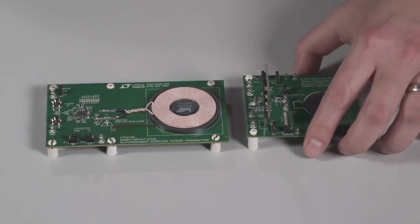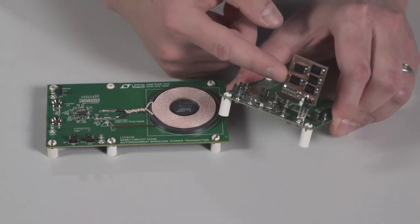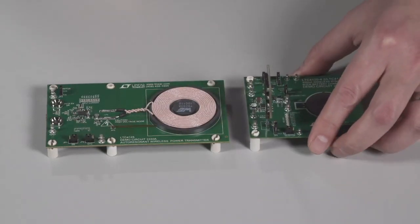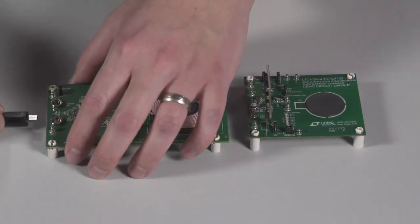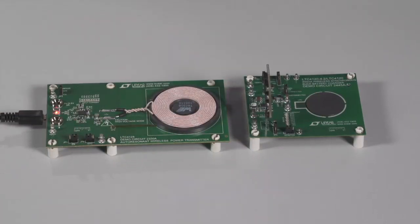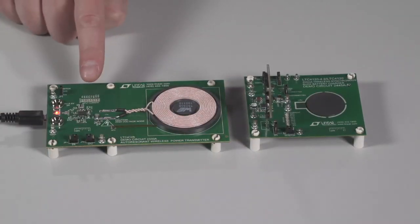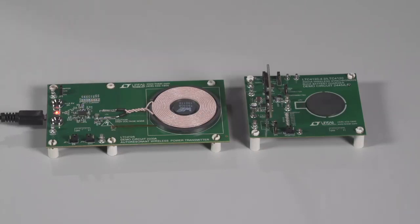For the purpose of this demo, I have used series connected diodes to emulate the battery. As I power on the LTC4125 transmit board, the LED bar graph starts blinking every 4 seconds. This wait time between each sweep is easily programmable with an external capacitor. The blinking indicates that the LTC4125 is performing its periodic sweep and not finding any valid receiver.